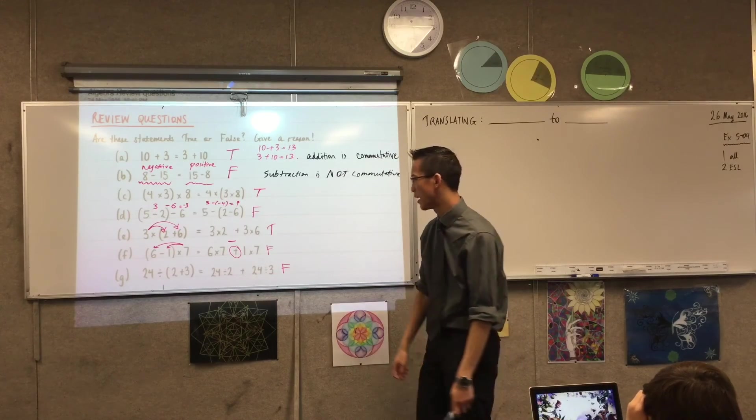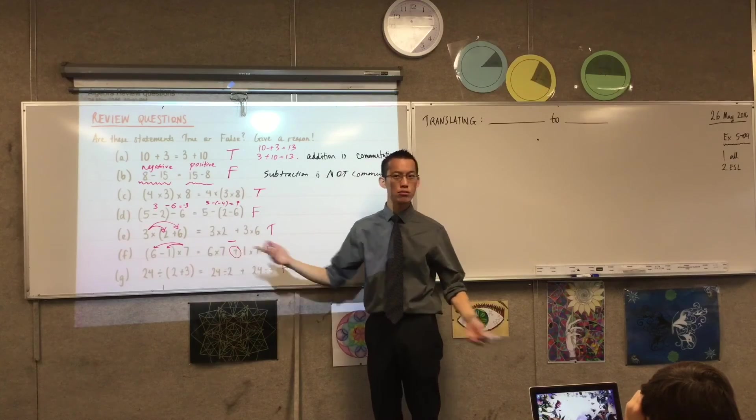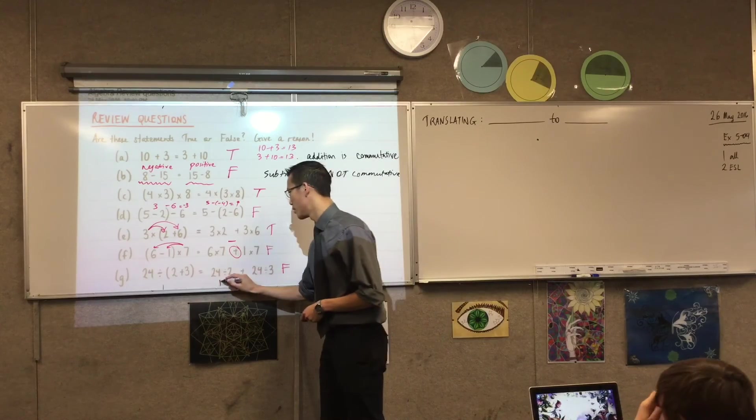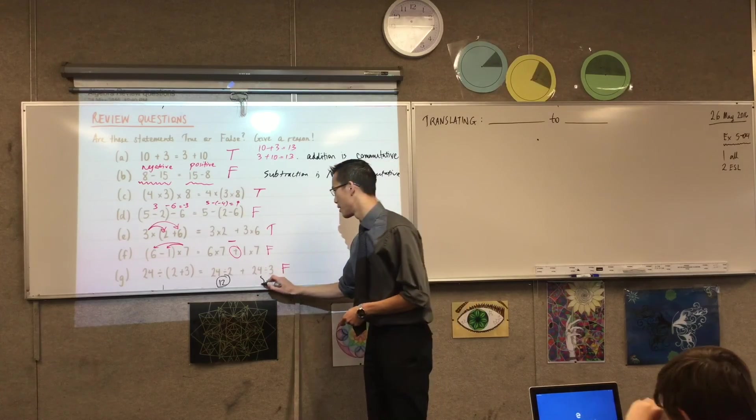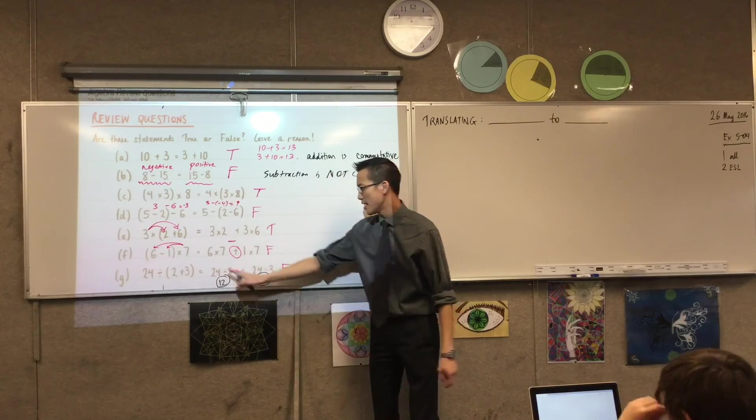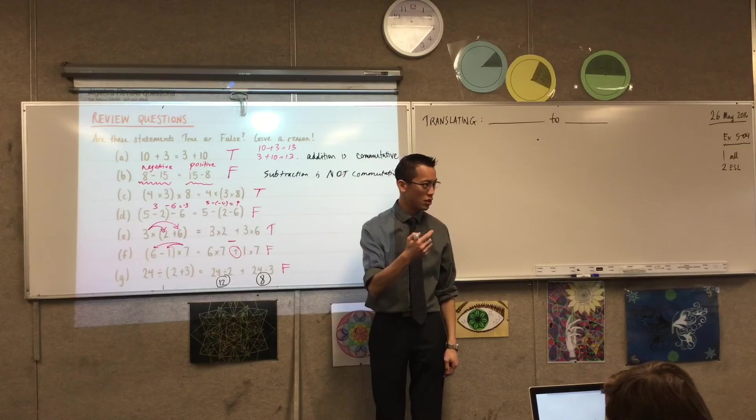We can prove this to ourselves really quickly. What's 24 divided by 2? That's 12. What's 24 divided by 3? It's 8. So this left-hand side is 12 plus 8, which is 20.